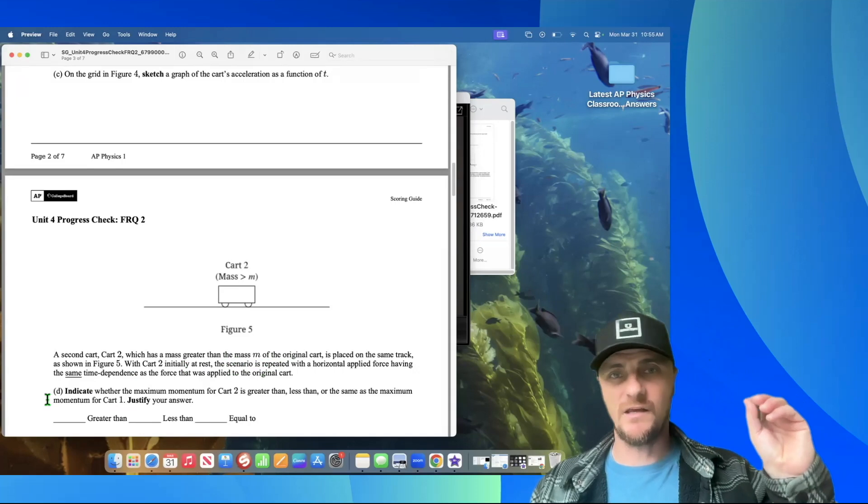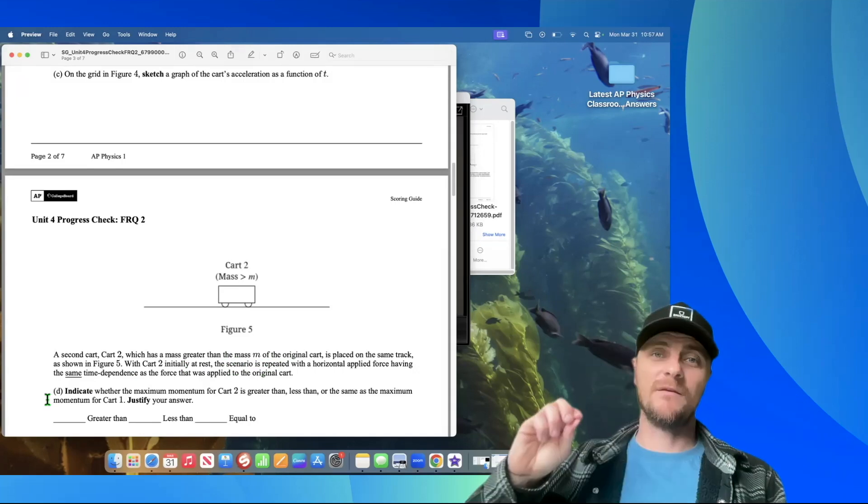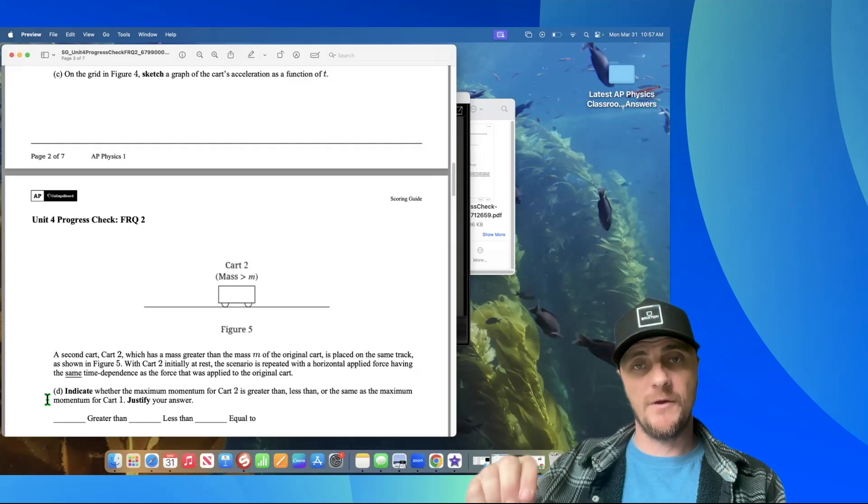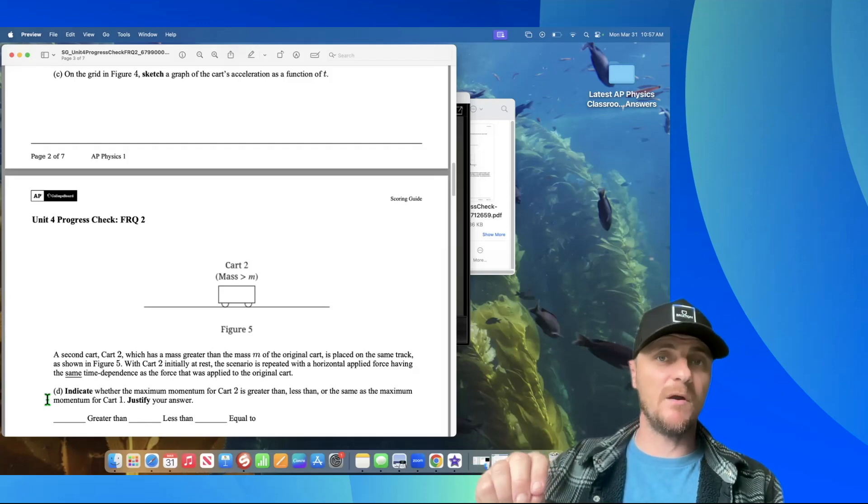I want you to check equal to, and here's why. The change in momentum delta p is equal to force times time period. Since the force and the time are exactly the same on cart 2,